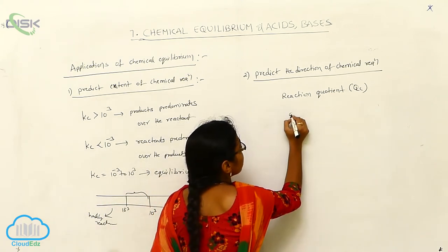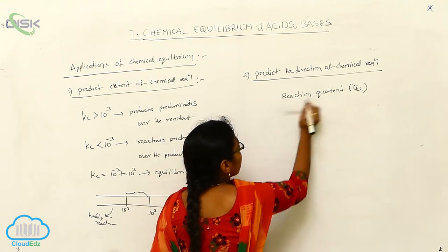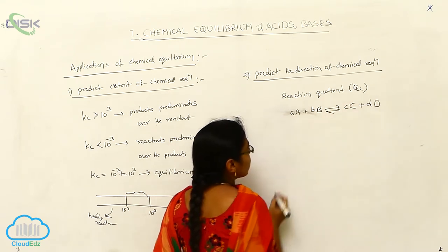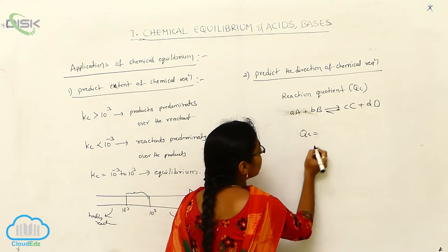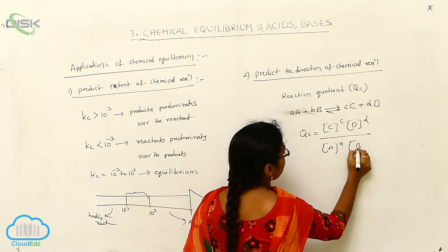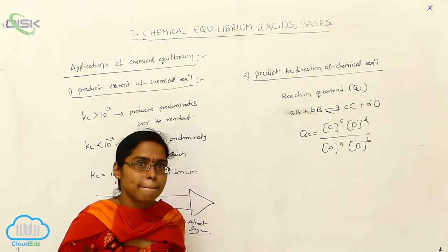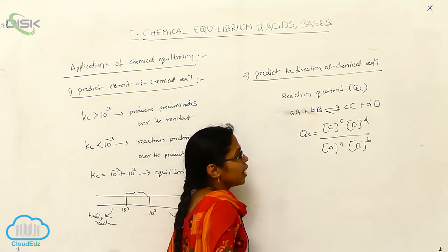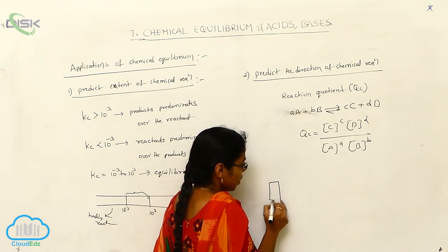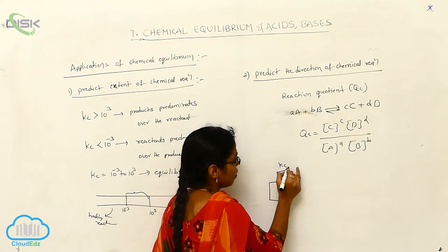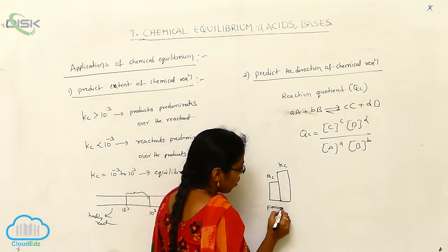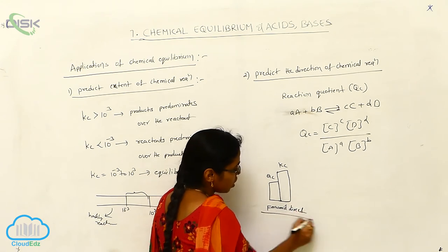For a reaction A + B gives C + D, Qc is equal to the concentration of C times concentration of D divided by concentration of A times concentration of B. Based upon Qc and Kc, if Qc is less than Kc, that indicates the forward direction of reaction.